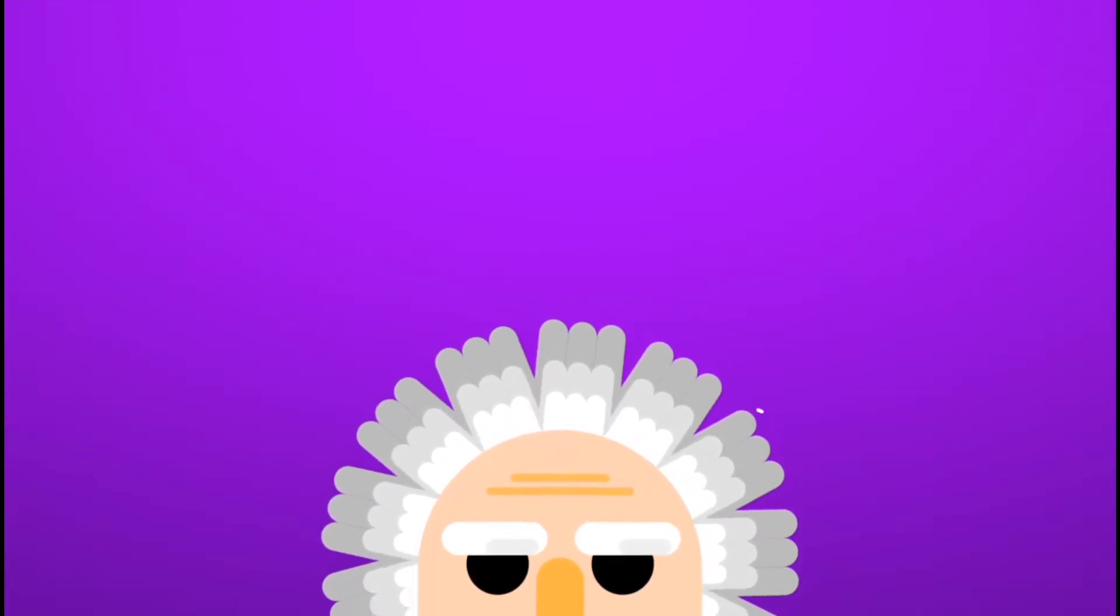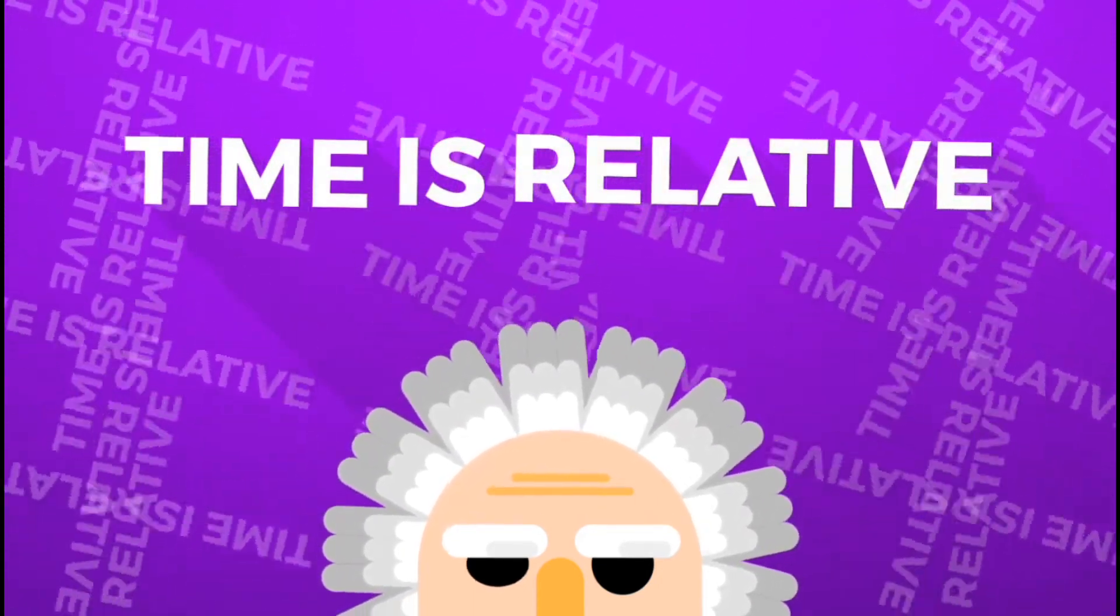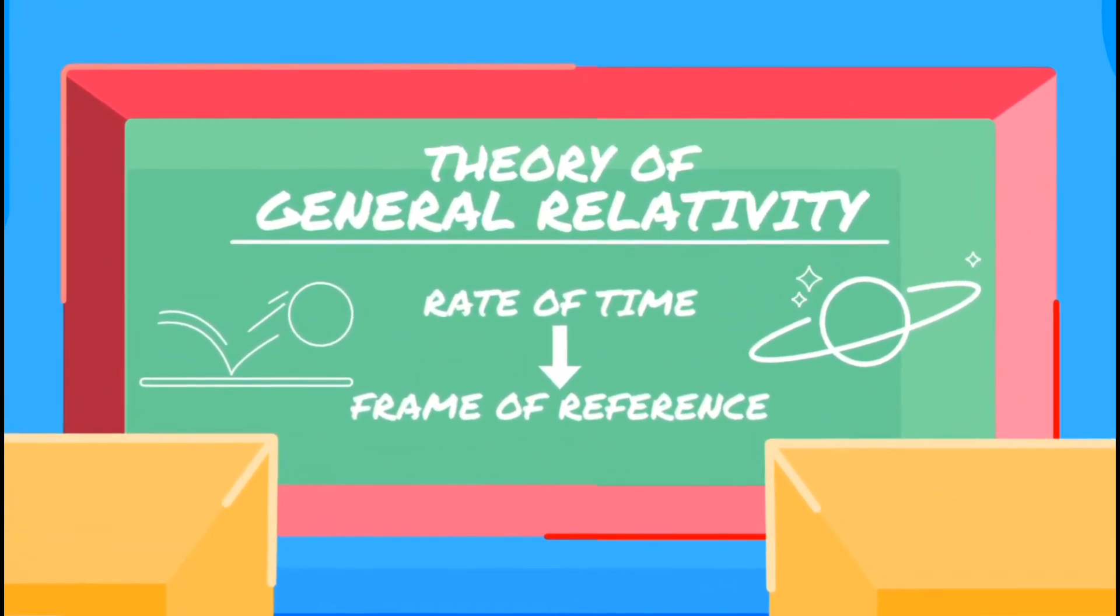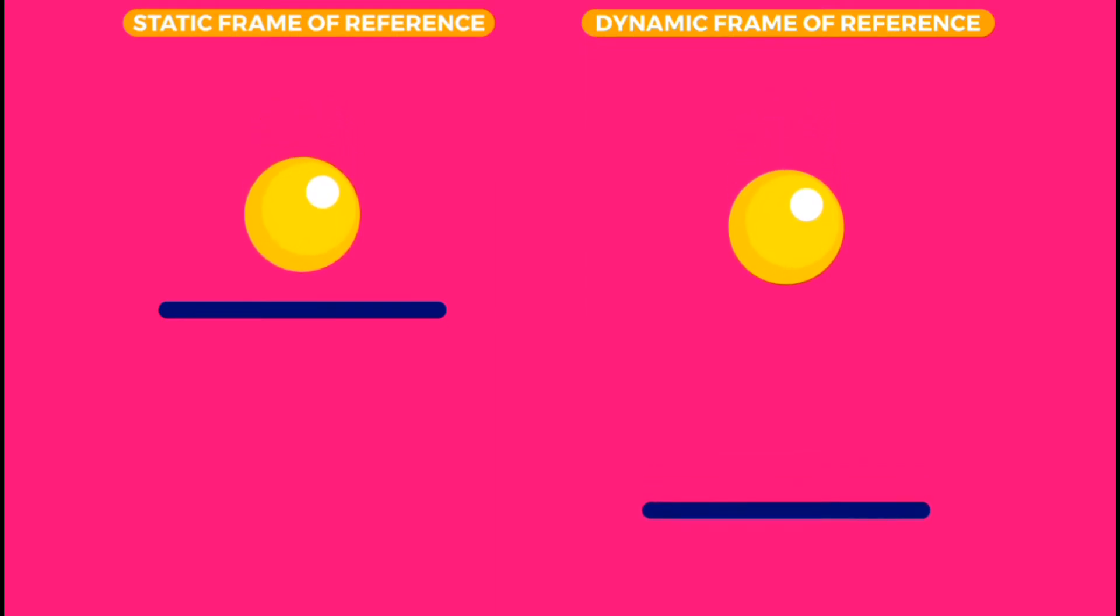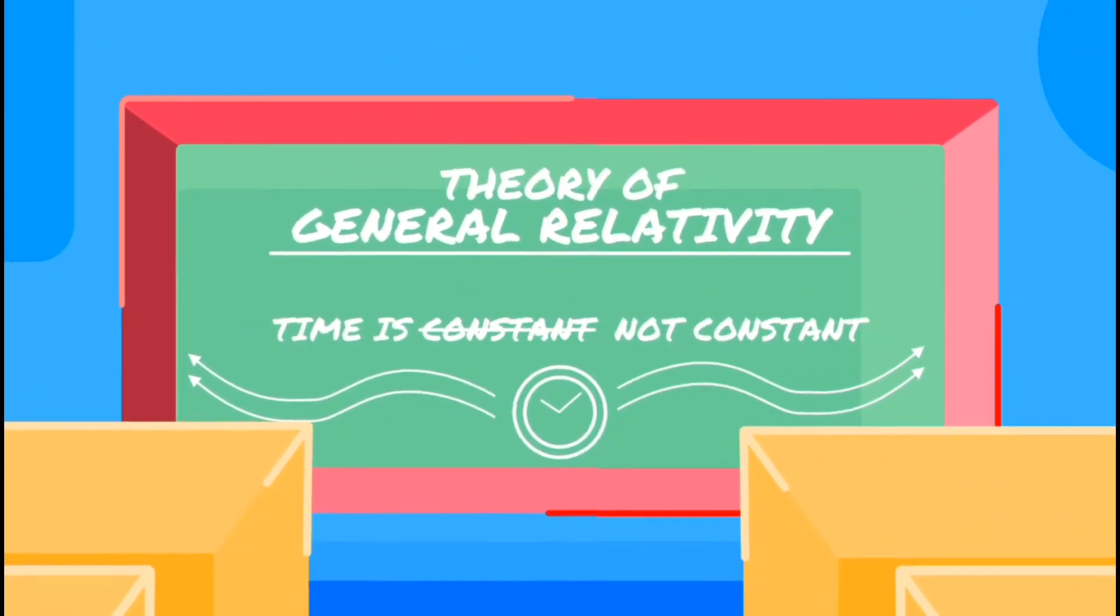But in the special theory of relativity, Einstein determined that time is relative. In other words, the rate at which time passes depends on your frame of reference. Just as observers in two different frames of reference don't always agree on how to describe the motion of a bouncing ball.